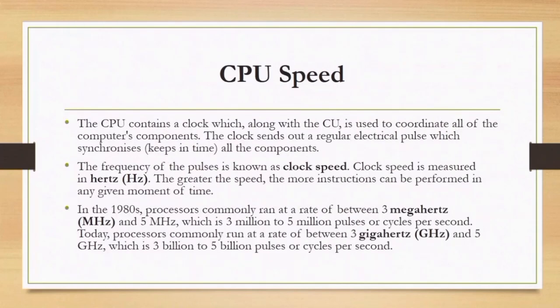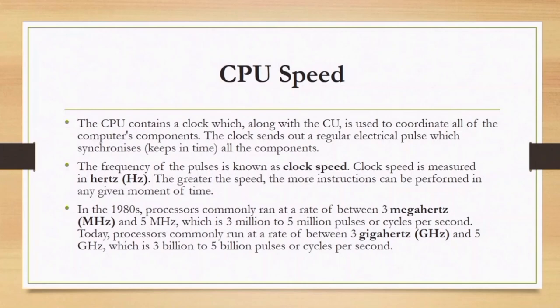CPU speed: the CPU contains a clock which, along with the control unit, is used to coordinate all of the computer's components. The clock sends out a regular electronic pulse which synchronizes all the components. The frequency of the pulse is known as clock speed, measured in hertz. The greater the speed, the more instructions can be performed in any given moment. In the 1980s, processors ran at a rate of between 3 megahertz and 5 megahertz — that is 3 to 5 million pulses or cycles per second.